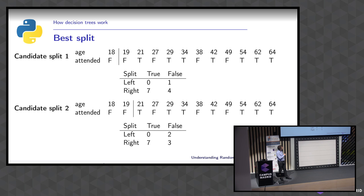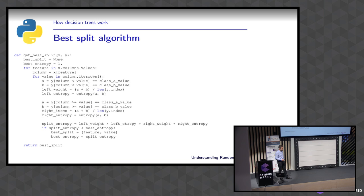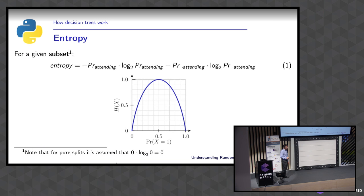We compute entropy for one side, then for the other side, and compute a weighted mean of both entropies. We weight them because a pure split with very few samples should not dominate over an impure split with many samples. This way we give more importance to a split being pure if it has more samples.